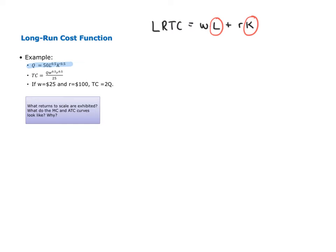To see how we derive input demand for this specific Cobb-Douglas production function, please watch my video called Input Demand Mathematical Derivation. In that video, you'll see how and why labor demand in this example is Q over 50 times the square root of R over W, and capital demand is Q over 50 times the square root of W over R.